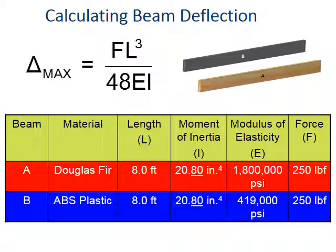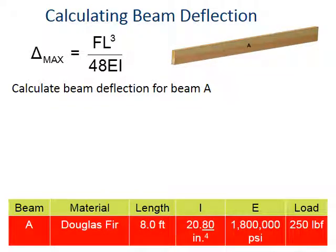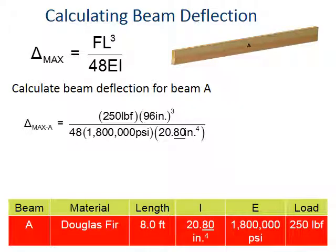Let's calculate for beam A. Below you see all the values for beam A, and let's assume we have a load of 250 pounds. In this ideal example, we've changed 8 feet into 96 inches. We plug in 1.8 million psi for E and 20.8 inches to the fourth for I. When we do that math, we find the deflection is just a little more than a tenth of an inch.